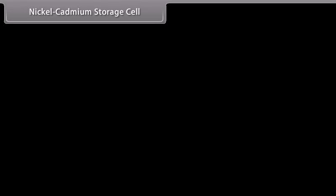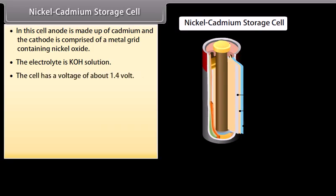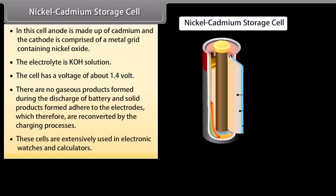Nickel-Cadmium storage cell. In this cell, anode is made up of cadmium and the cathode is comprised of a metal grid containing nickel oxide. The electrolyte is KOH solution. The cell has a voltage of about 1.4 volts. There are no gaseous products formed during the discharge of battery, and solid products formed adhere to the electrodes, which therefore are reconverted by the charging processes. These cells are extensively used in electronic watches and calculators.